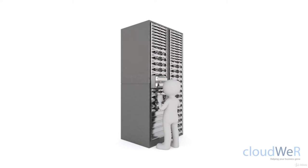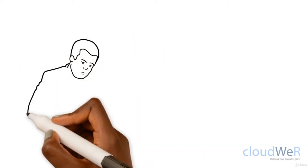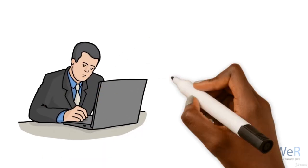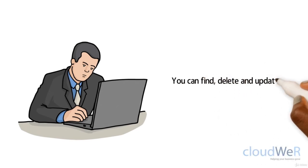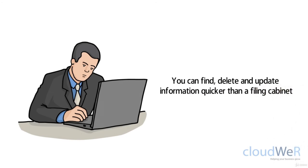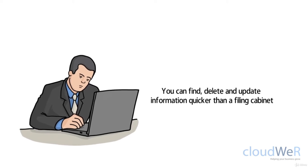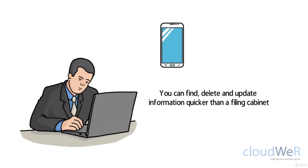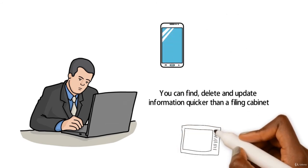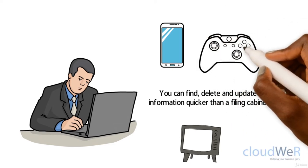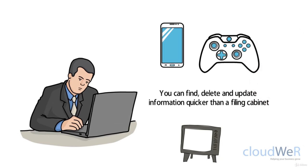A database is just a modern version of a filing cabinet located within a computer. The advantages are that you can find, delete, and update information much quicker than with a paper-based system. Most companies use a database to store information, and devices you already use — your phone, TV, and other electronics — all contain databases, even if you don't realize it.